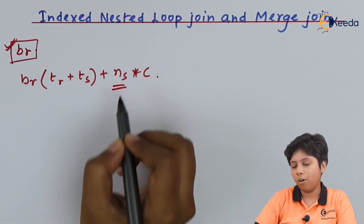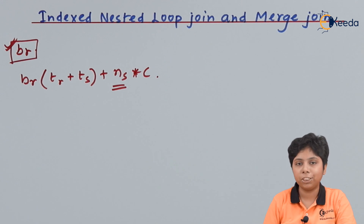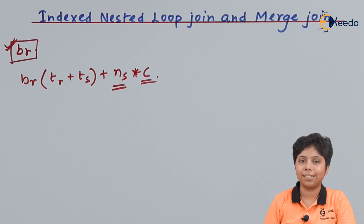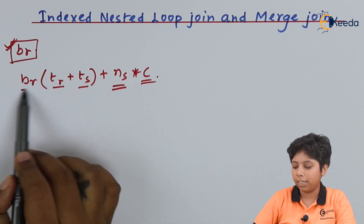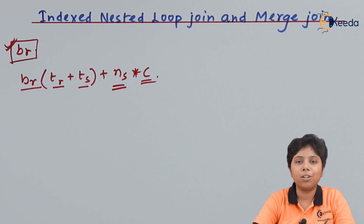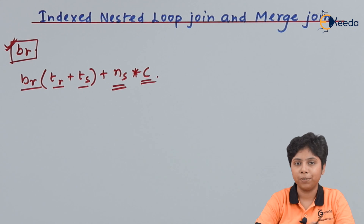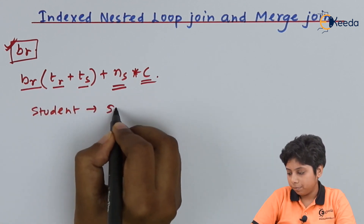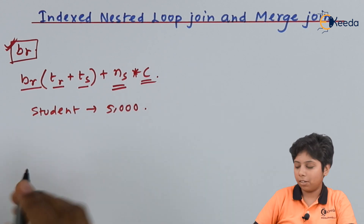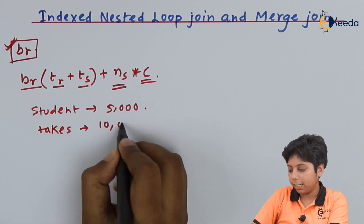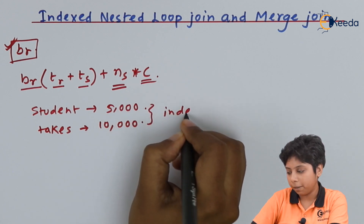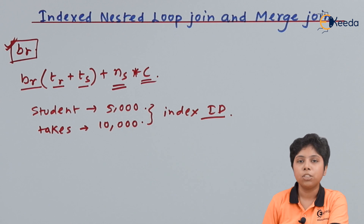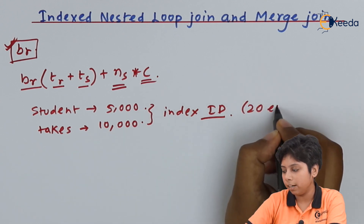Here, ns is the number of attributes or queries in this inner relation s, and c is the individual cost of accessing them. For the outer loop we will have only the tuples based on an index — the block on that outer loop. So now let us calculate using the same student relation we used for nested loop join. Our student relation has 5000 entries and our text relationship has 10,000 entries. On joining them on an index ID — that means the student's ID taken as the index — on average 20 entries are there per index.